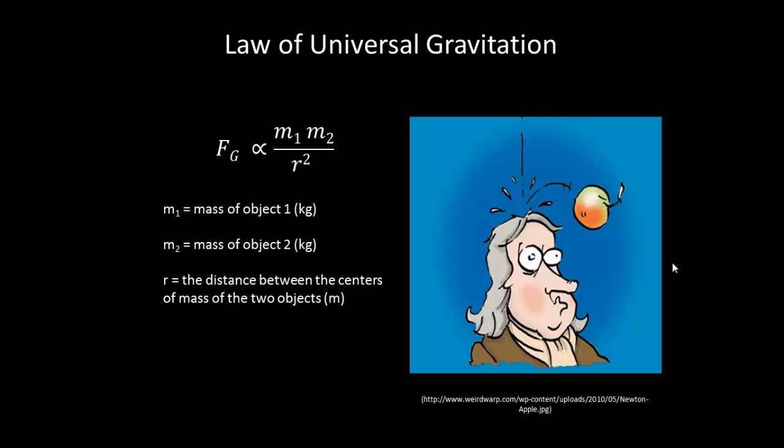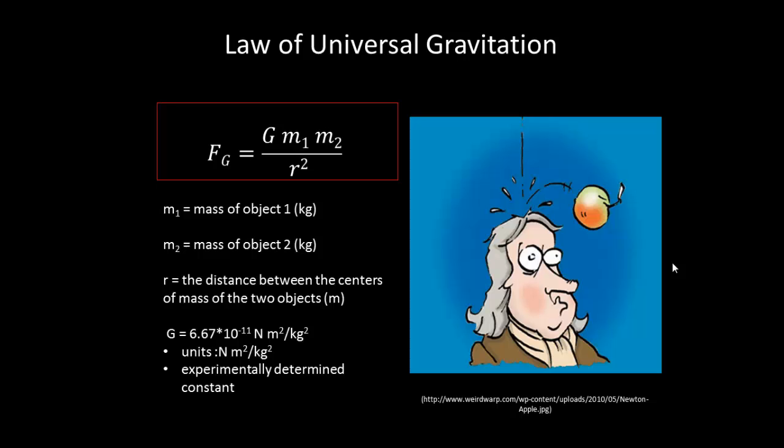Now we say it's proportional to, we now can consider that it's actually equal to some constant times M1 M2 over R squared. This constant G is equal to 6.67 times 10 to the minus 11th. The units are newtons meters squared over kilograms squared, and it's an experimentally determined constant. One of the most precise measurements of G actually occurred here in Seattle at the University of Washington. Ask Dr. Butler about it. His advisor was the principal researcher on the experiment.